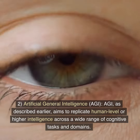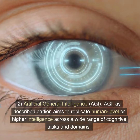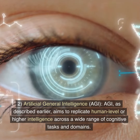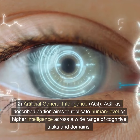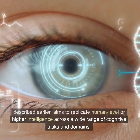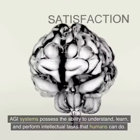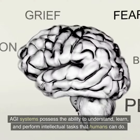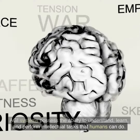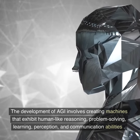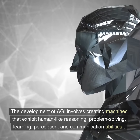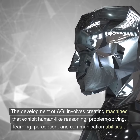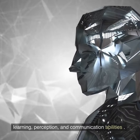Two: Artificial general intelligence, AGI. AGI, as described earlier, aims to replicate human-level or higher intelligence across a wide range of cognitive tasks and domains. AGI systems possess the ability to understand, learn, and perform intellectual tasks that humans can do. The development of AGI involves creating machines that exhibit human-like reasoning, problem-solving, learning, perception, and communication abilities.